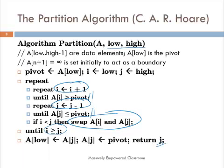The partition algorithm, in its in-place version, starts with two pointers i and j at the two ends of the array and moves them closer to one another. i moves to the right, j moves to the left. Along the way, if it finds any element on the left which belongs in the right partition, or any element on the right which belongs in the left partition, it swaps them. It does both comparison and swap operations, but there are far more comparison operations than swap operations, so we are going to only count the comparison operations.